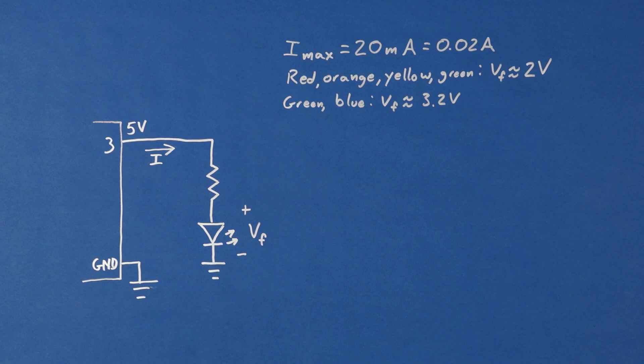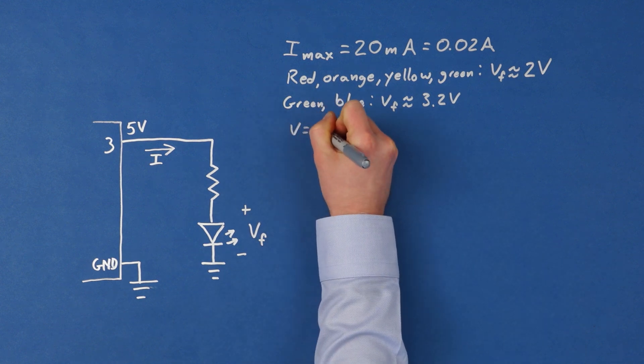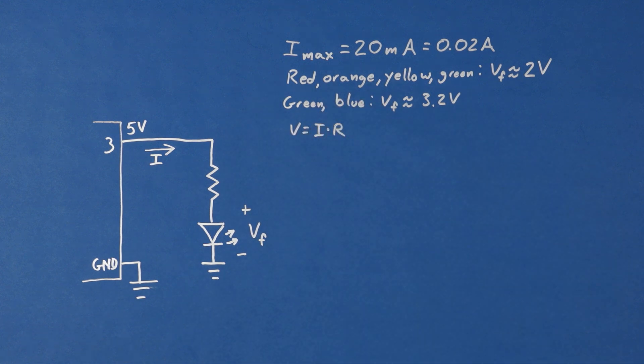We start by solving for the resistor value that will give us 20 milliamps through the circuit, the maximum allowable current. So, we start with Ohm's law, V equals I times R, or voltage equals current times resistance.